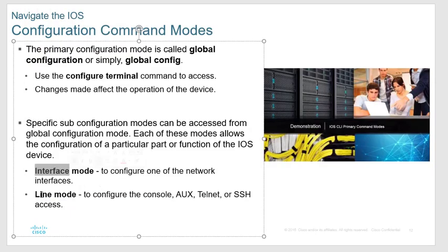Your router has interfaces and lines. A line is typically used to make changes and do programming to the router itself, while an interface is used to send user data between networks. You have three main lines: the console port (line console 0), the auxiliary port (line aux 0), and the telnet lines. Up to five people can telnet into a router at the same time, so you configure all the lines with 'line vty 0 4' — zero through four, because everything starts at zero with Cisco.